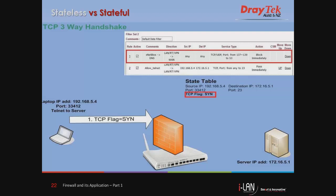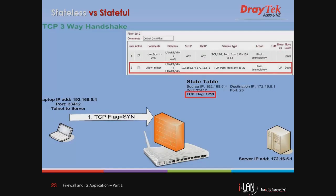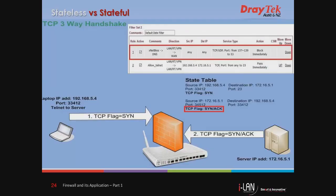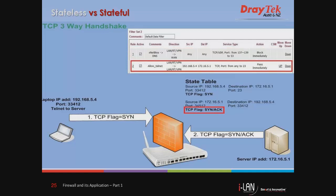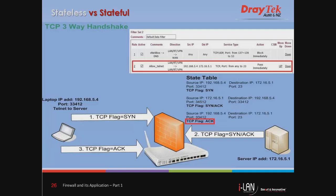Now we will look into the Draytek router stateful firewall feature. This scenario is the same as before but using a Draytek router, which is a stateful firewall. It will create a state table that records the state of packets passing through the firewall. Using the TCP three-way handshake process: when the laptop wants to connect to the server using Telnet, it sends a TCP SYN flag. The Draytek router records the TCP flag in its state table and checks the firewall policy. The server replies with TCP SYN-ACK, and the Draytek router again records the TCP flag to its state table.